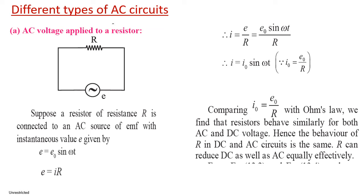Today in this video, we are going to discuss about the different types of AC circuits. We will be trying to derive the voltage and current relationships for individual as well as combined circuit elements such as resistors, inductors, and capacitors carrying a sinusoidal current. Let us first discuss about AC voltage applied to a resistor.